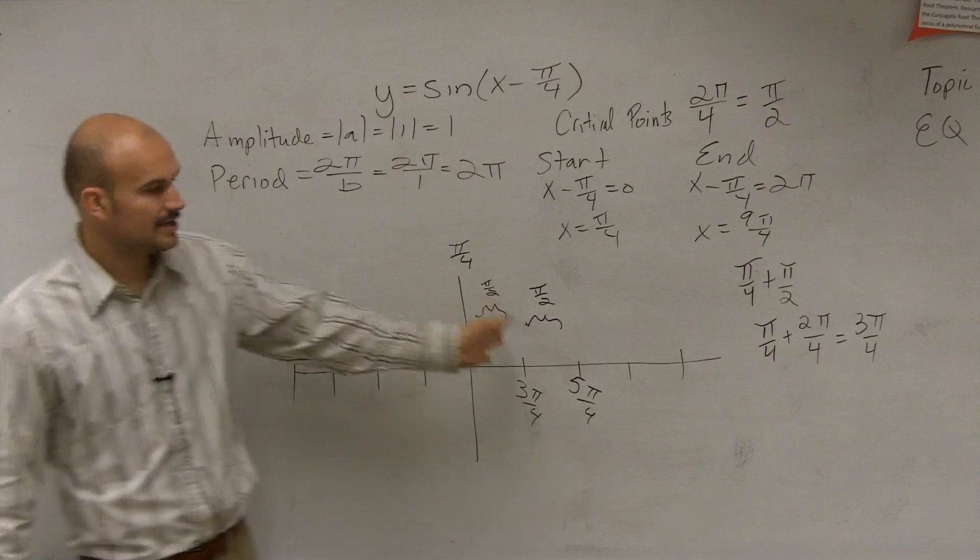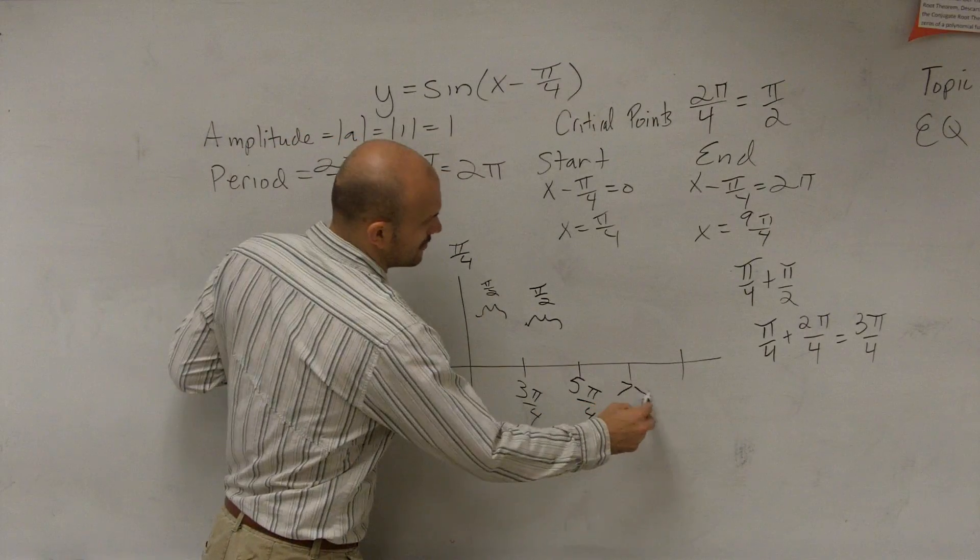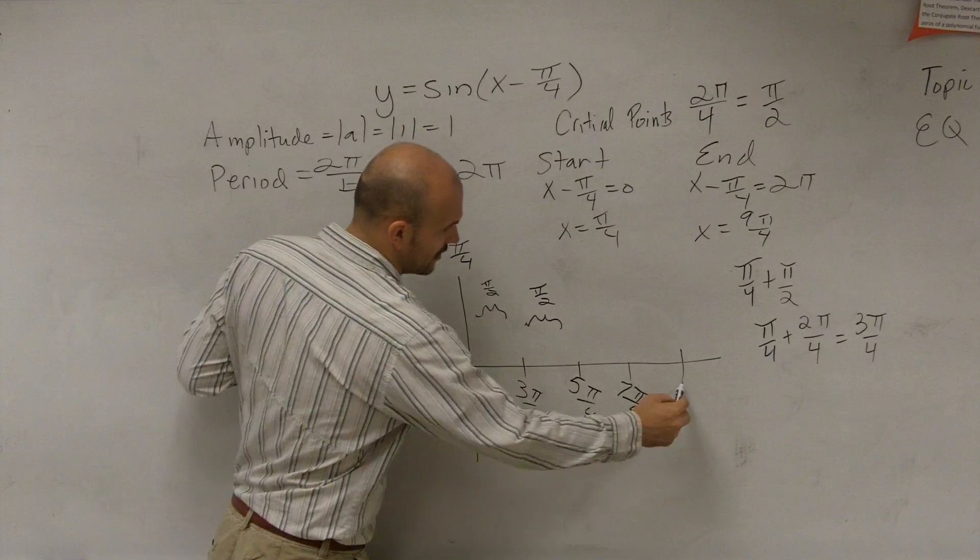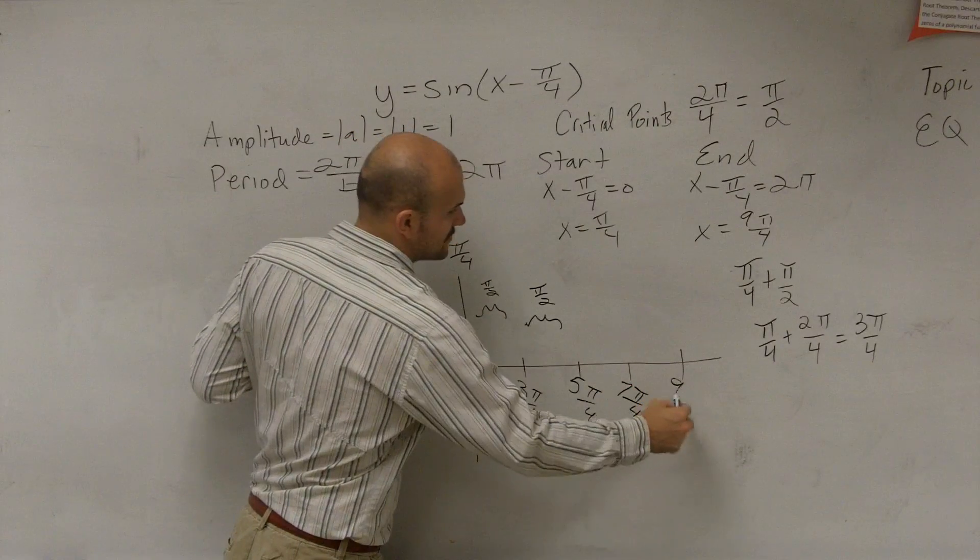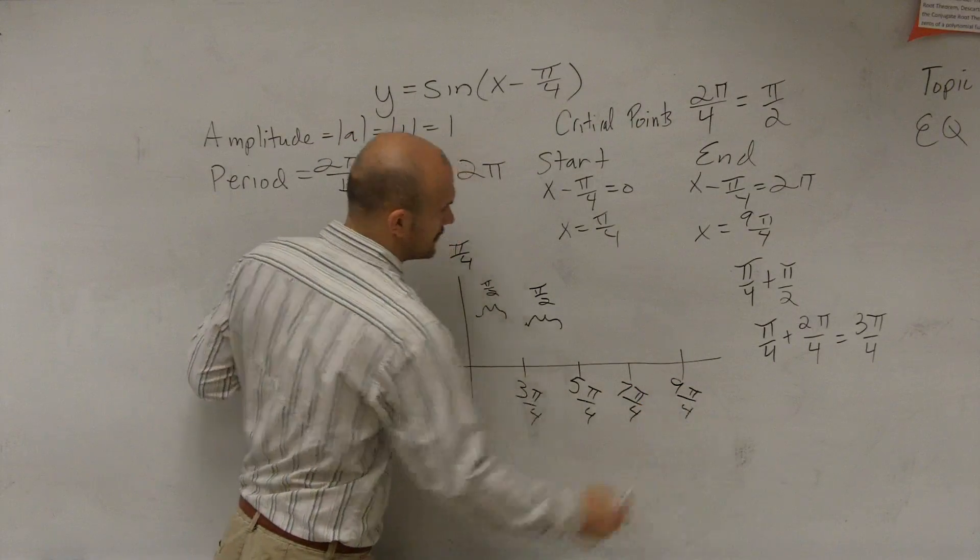Then, we add another π halves, which will give us 7π over 4. Add another π halves, we get 9π over 4.